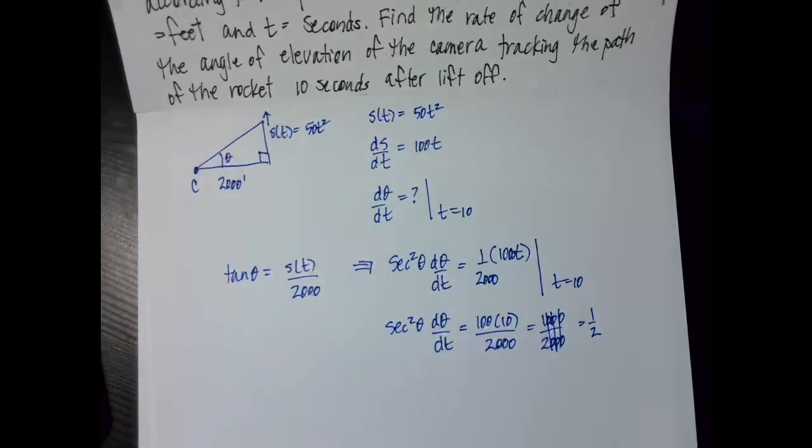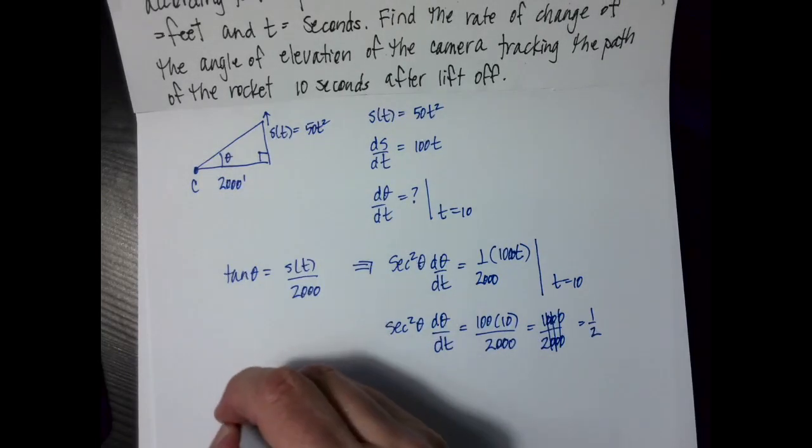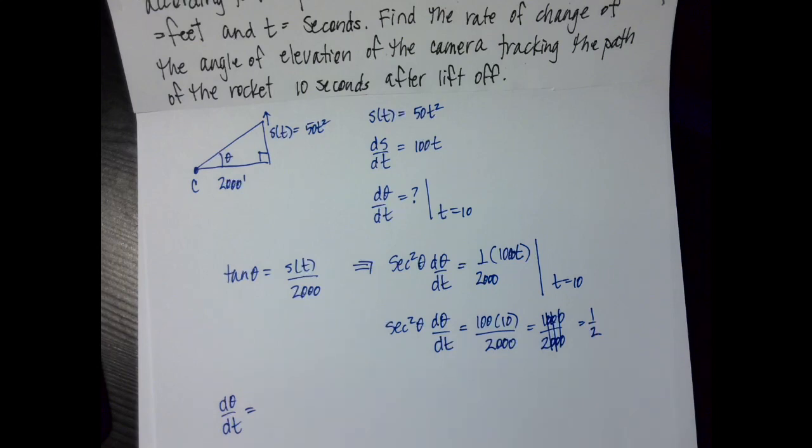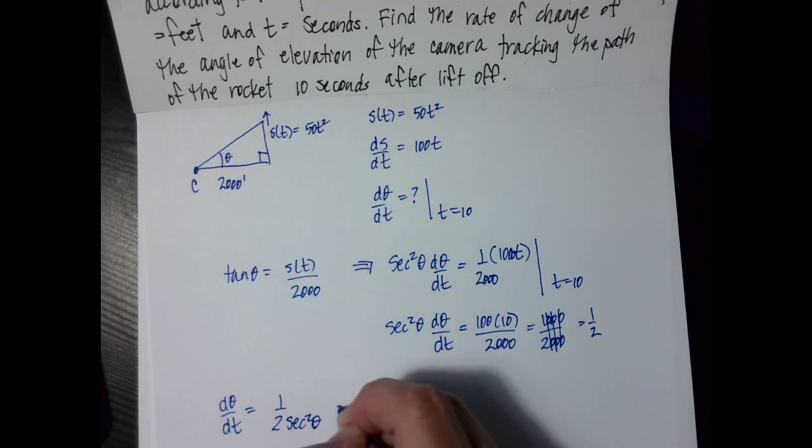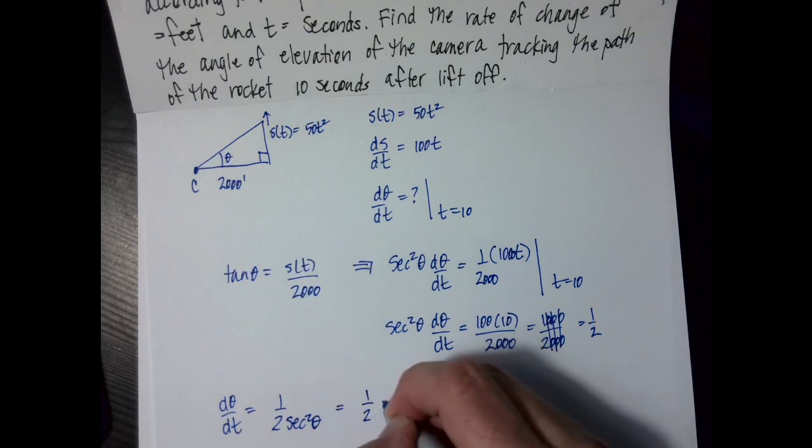I'm still trying to solve for d theta dt, so I'm going to get d theta dt equals my 1 half, and then I'm going to divide by secant squared theta, which is the same thing as 1 over 2 cosine squared theta.